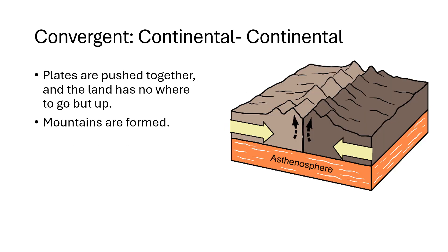Next we look at convergent boundaries, where plates are pushed together. With continental-continental convergence, two continents come together pulled by mantle convection cycles going in the opposite direction from divergent. When those two continents are pushed toward each other, the land has nowhere to go but up, so we start to create mountain ranges. An example of that would be the Himalayas.